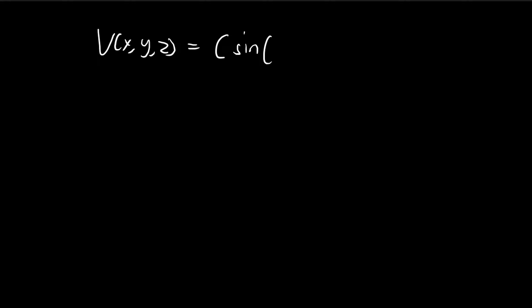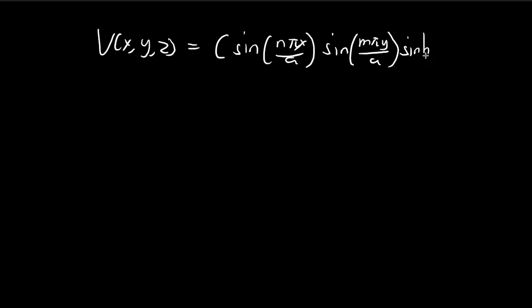With k and l determined, our solution takes the form: sin(nπx/a) · sin(mπy/a) · sinh(√(n²+m²)·πz/a). The remaining unknown is the constant C.